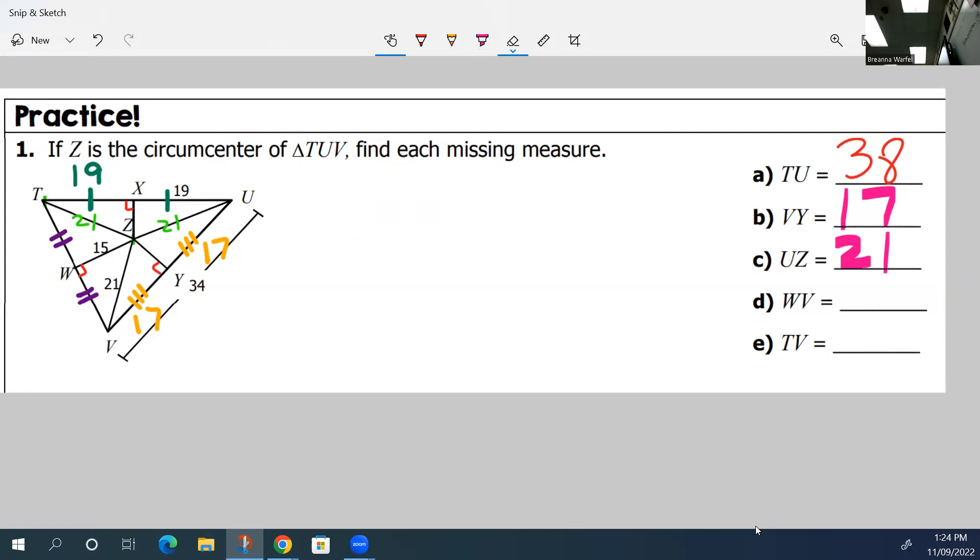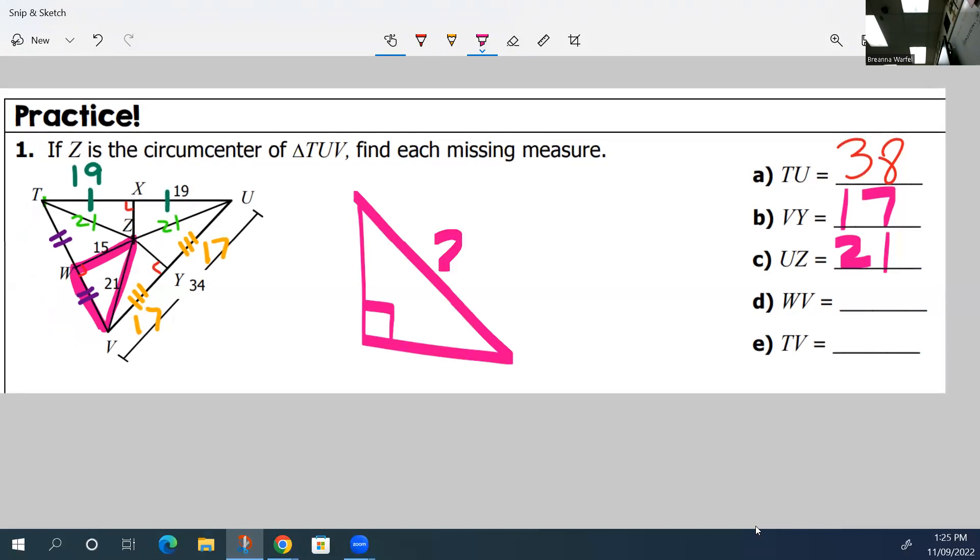W to V. This piece right here. Now, we do not know that measurement. We also don't know the whole measurement. So we're going to have to do a little bit extra math. This is where the application part comes in. If we look at that triangle, it's a right triangle. Because it's a right triangle, we have some special things. We know that the hypotenuse is 21. We know that this side is 19.